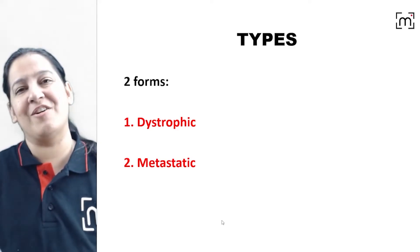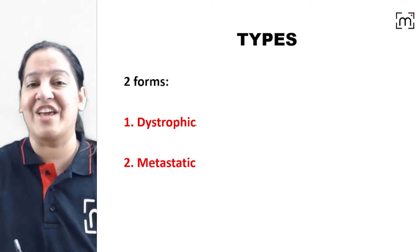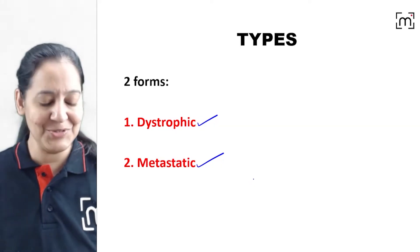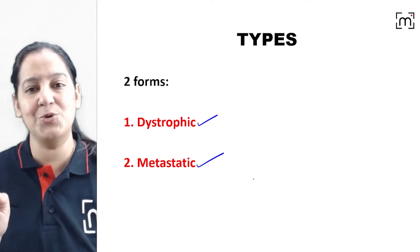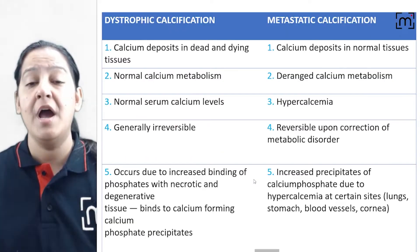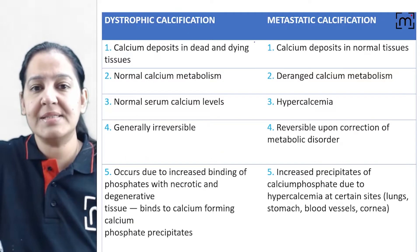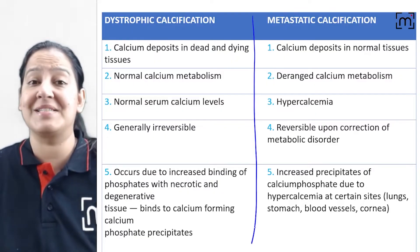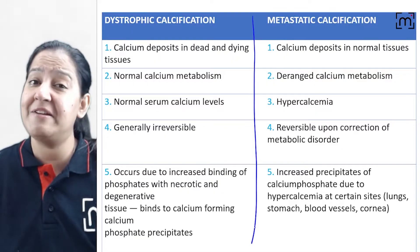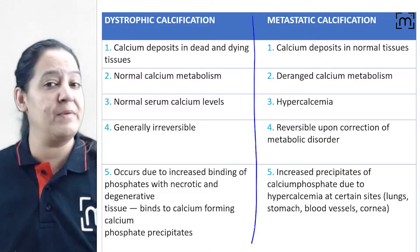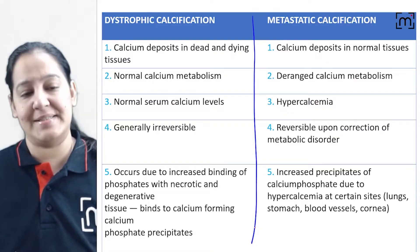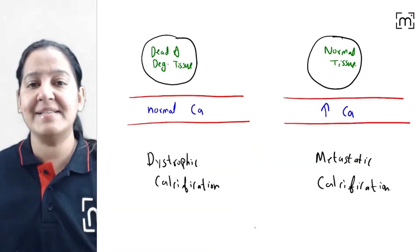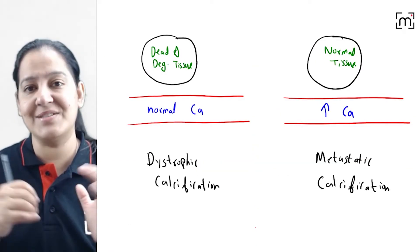There are two types of pathologic calcification: dystrophic and metastatic. It is very important to understand the differences between them. Let's have a look at a diagram to understand the differences.